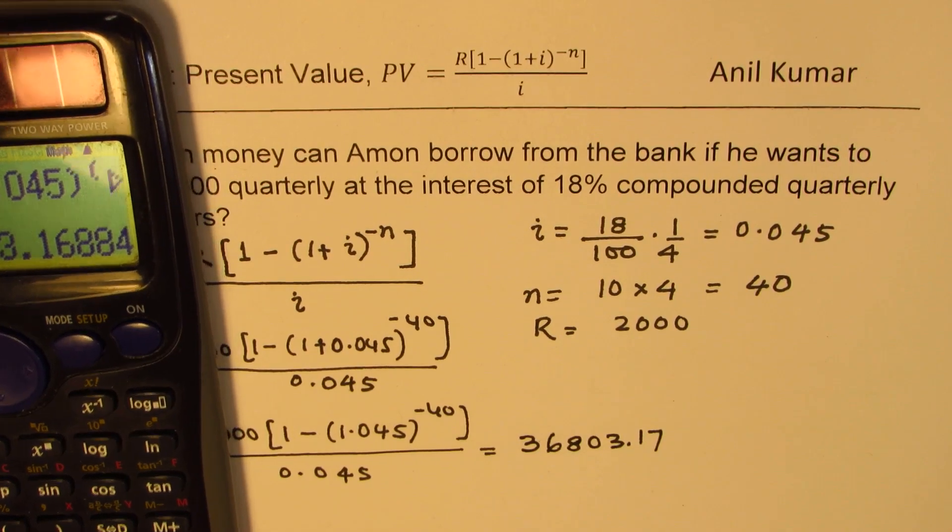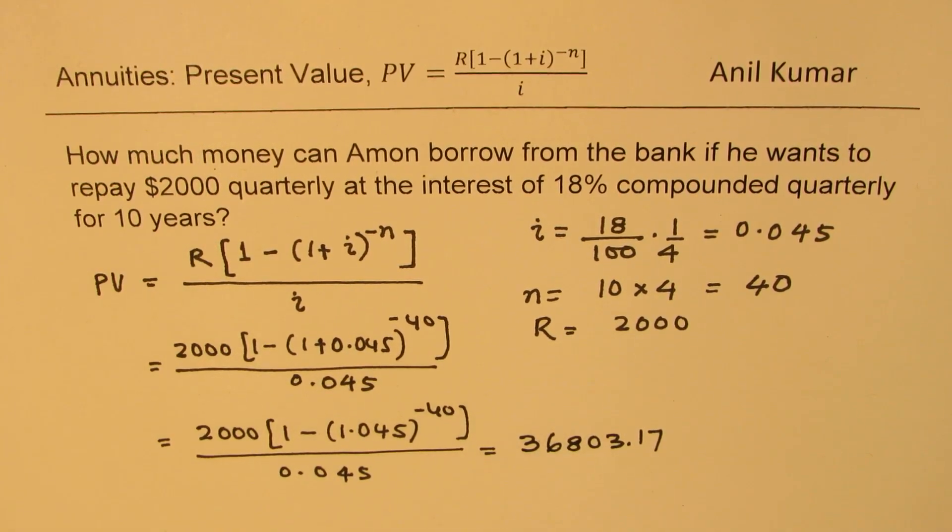So it is 36,803.16, which can be rounded as .17. So our answer is that the present value of this amount, which is being borrowed, is $36,803.17. Is it clear to you? So that is how we can actually calculate the value, and I hope that helps.